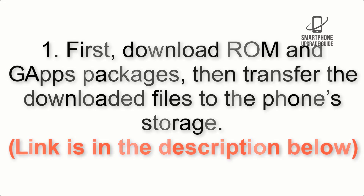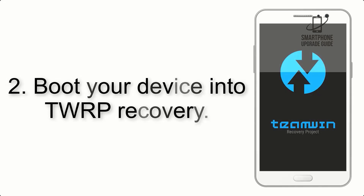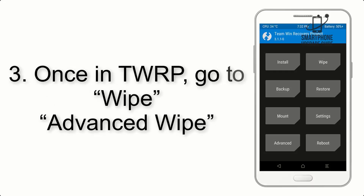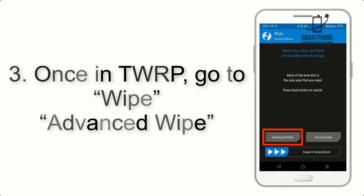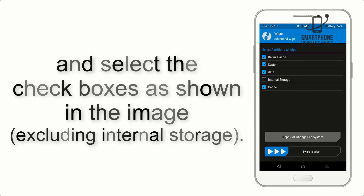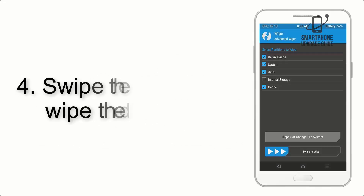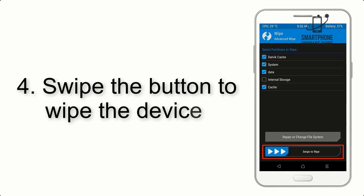Step 3: Boot your device into TWRP recovery. Once in TWRP, click on Wipe, then Advanced Wipe, and select the checkboxes as shown in the image, excluding internal storage.